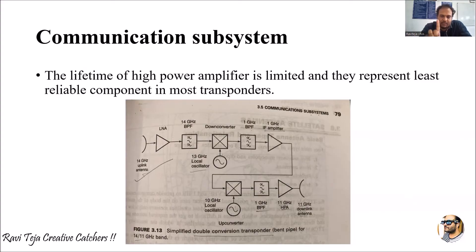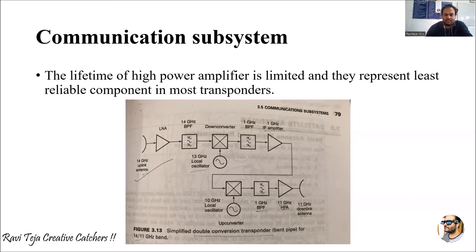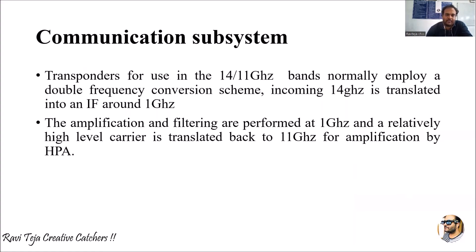Single conversion transponder means conversion is done only one time using a local oscillator, whereas double conversion transponder means two conversions are done using local oscillators. In both cases, these transponders are considered bent pipe — one operating at six by four gigahertz and the other at 14 by 11 gigahertz.